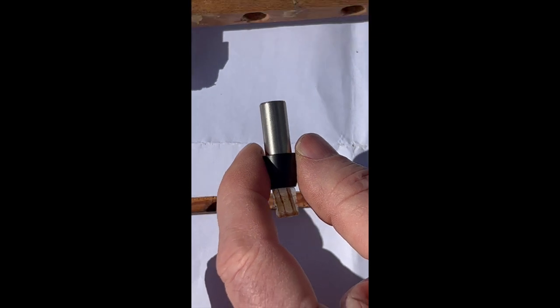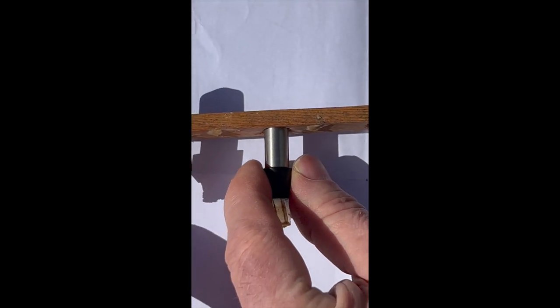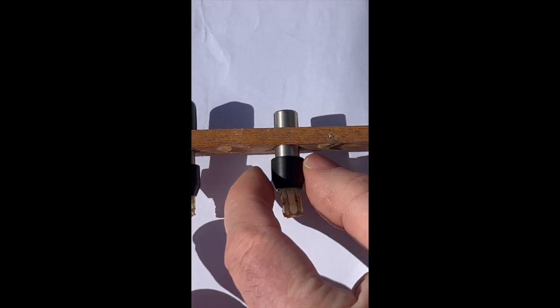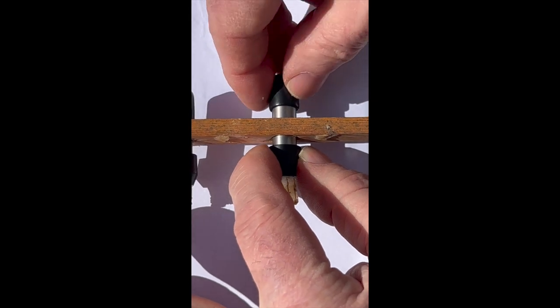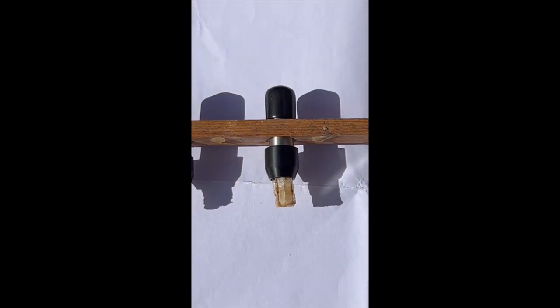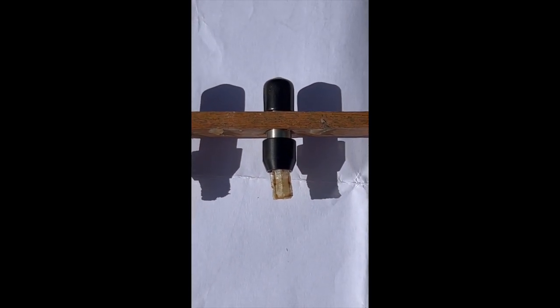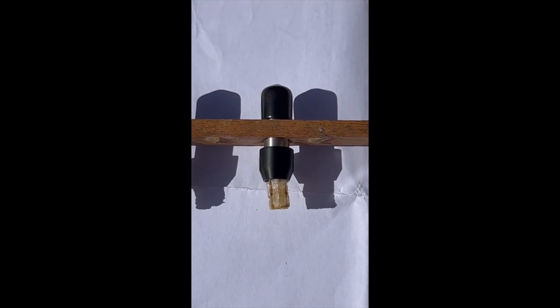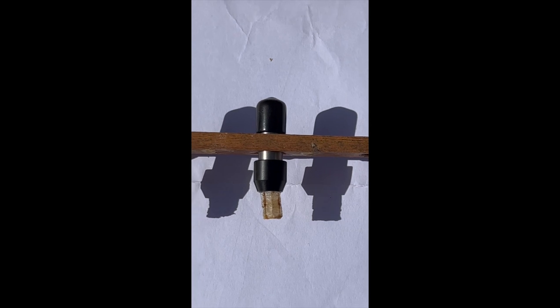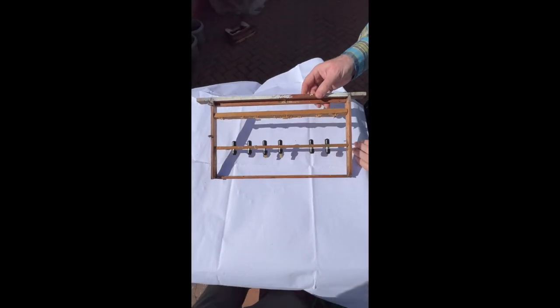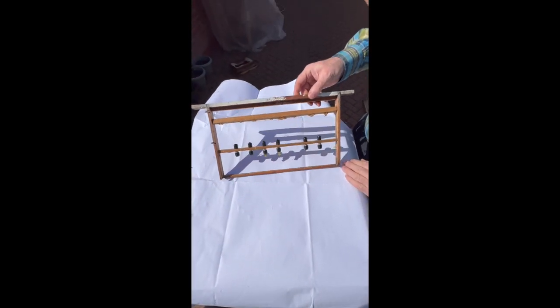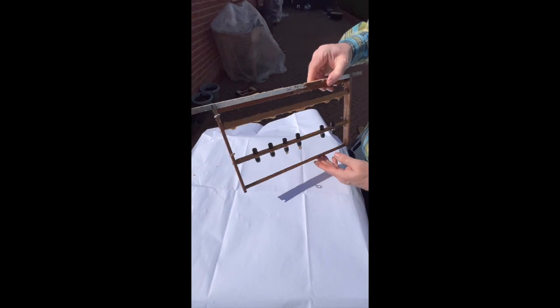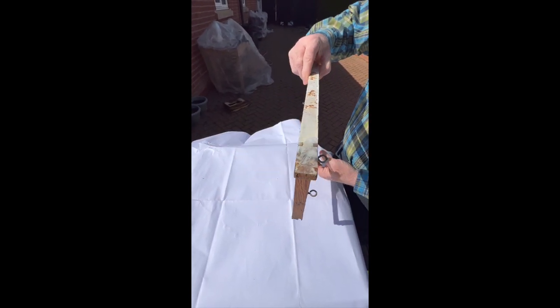You then take it and put it inside the frame. This is just a bar which I've fitted inside a standard deep frame, and that's ready to be placed into your cell starter.